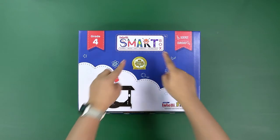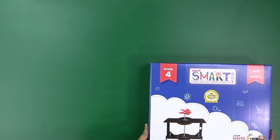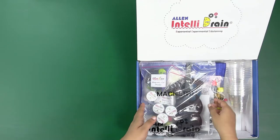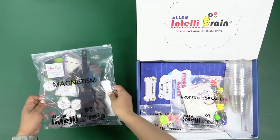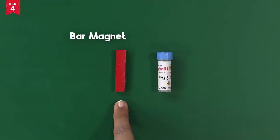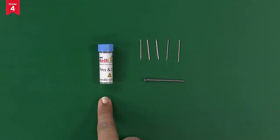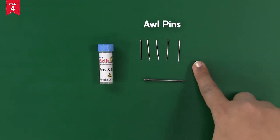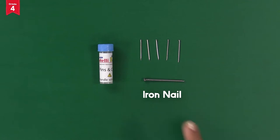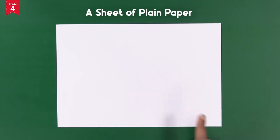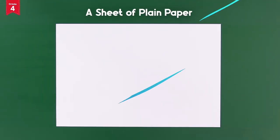From the IntelliSmart box, take out the magnetism activity kit. Take out the bar magnet and the pins and clips bottle from the kit. From the pins and clips bottle, you will need all the pins and the iron nail. You will also need a sheet of plain paper from your home.